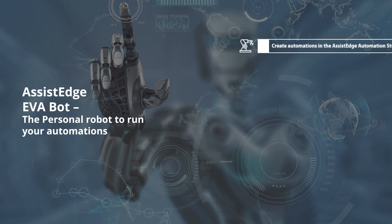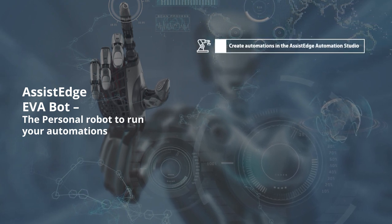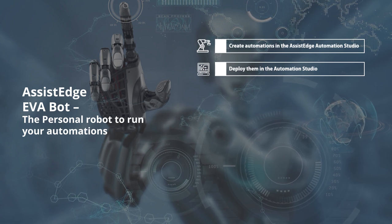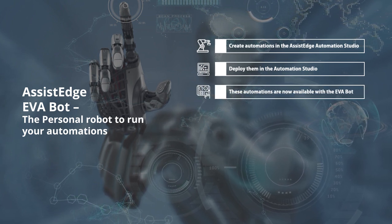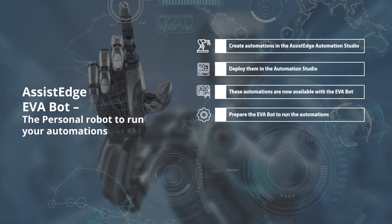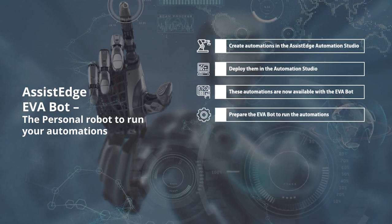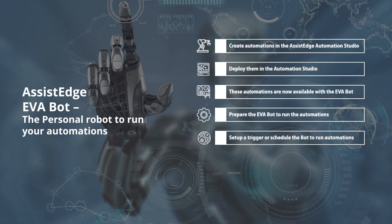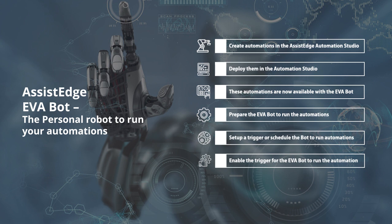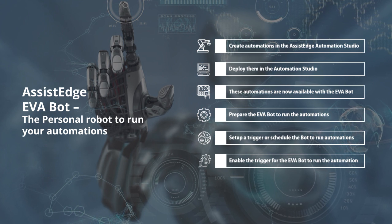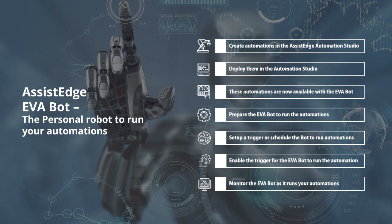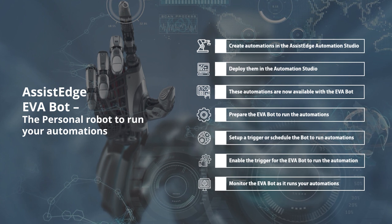Create automations in the Assist Edge Automation Studio and deploy them in the Automation Studio. These automations are now available with the Eva Bot. Prepare the Eva Bot to run the automations — set up a trigger or schedule the bot to run automations. Enable the trigger for the Eva Bot to run the automation, and monitor the Eva Bot as it runs your automations.